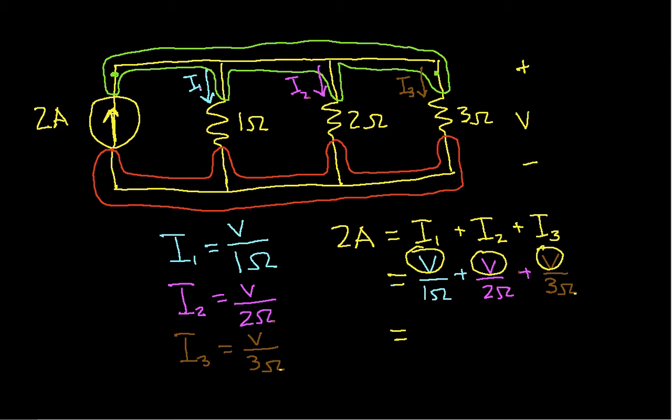My experience has been that sometimes people get confused when they're doing the factoring in the algebra. You need to do this carefully. When you do this, you'll have V times 1 over 1-ohm plus 1 over 2-ohms plus 1 over 3-ohms. People quite often make mistakes in the algebra here.